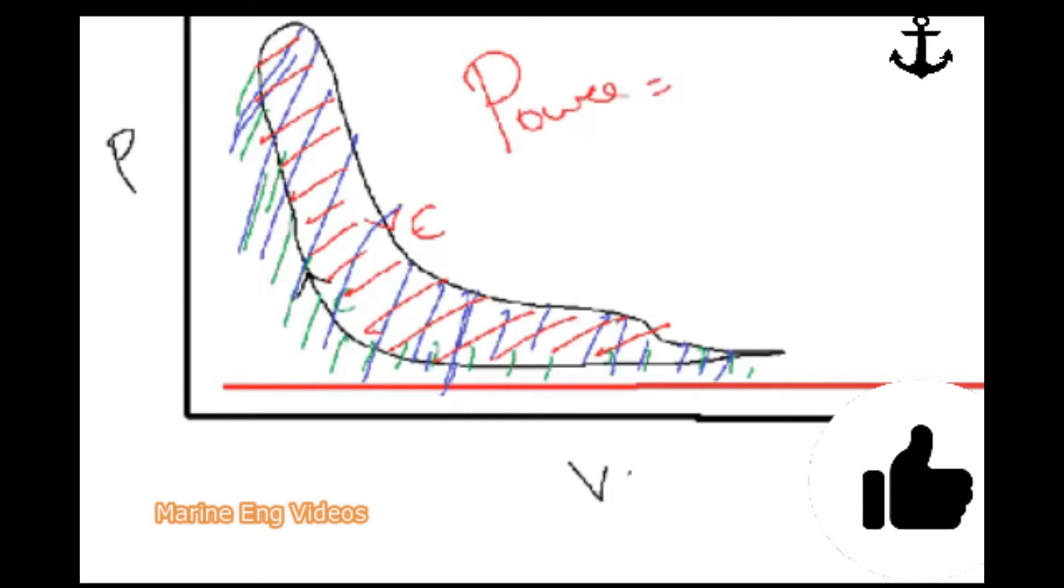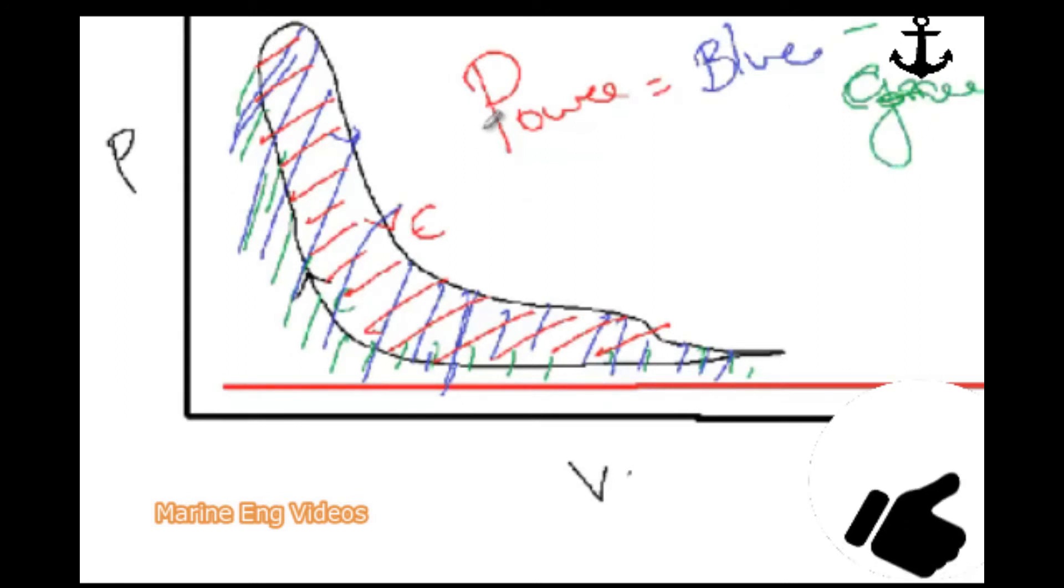The actual power developed is equal to the area under the blue curve, that is the expansion curve, minus the area under the compression curve. That's going to give the indicated power within the cylinder.